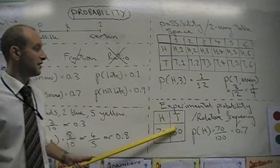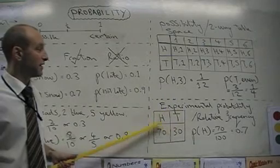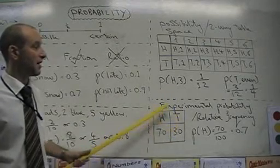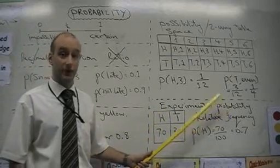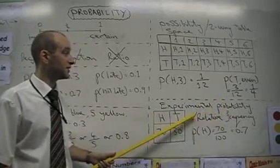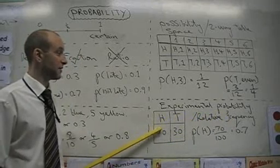We've got 70 heads and 30 tails. Now, if we do the probability from an experiment, we call it the relative frequency. Don't let that confuse you if I ask you that in an exam. Very simple. Relative frequency is just probability from an experiment.